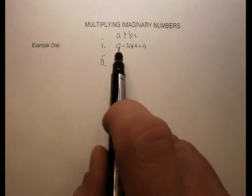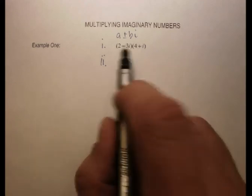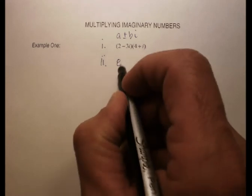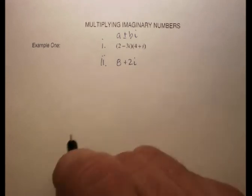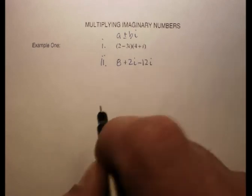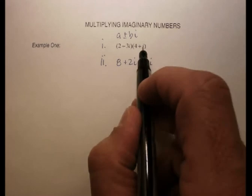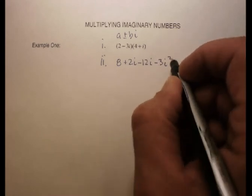So I have two imaginary numbers here that I'm going to FOIL. So 2 times 4 is 8. 2 times I is plus 2I. Negative 3I times 4 is a negative 12I. And negative 3I times I is a negative 3I squared.